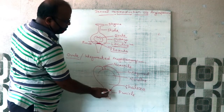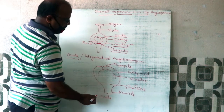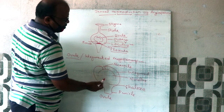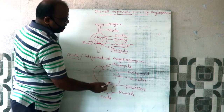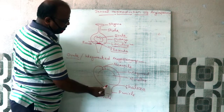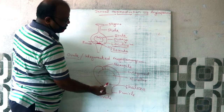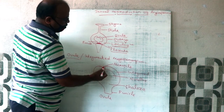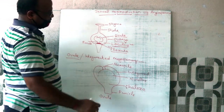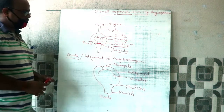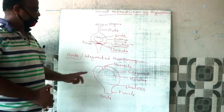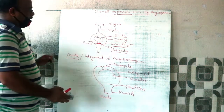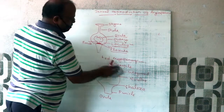The stalk of the Ovule is known as the Funicle or Funiculus. The central portion is known as the Nucellus and the covering is called the Integument. The basal portion is known as the Chalaza and the tip narrow portion is known as the Micropyle. This is the structure of a typical Ovule.